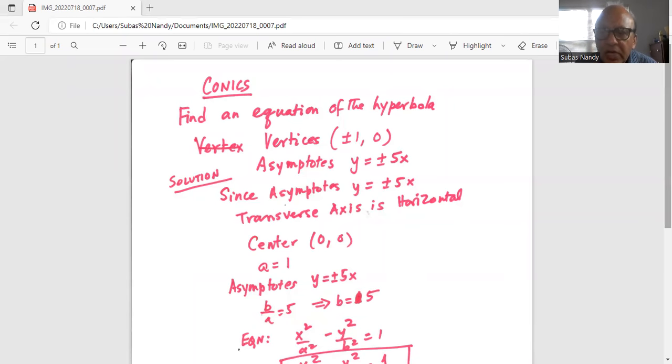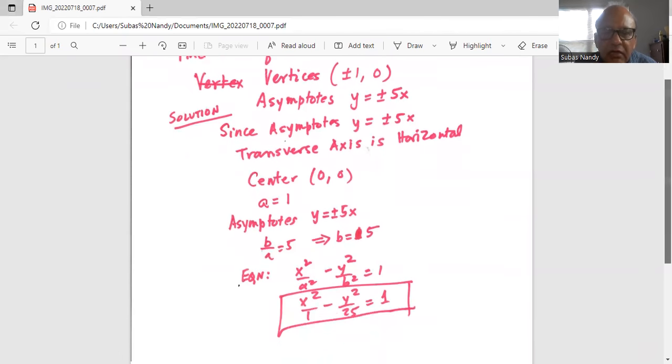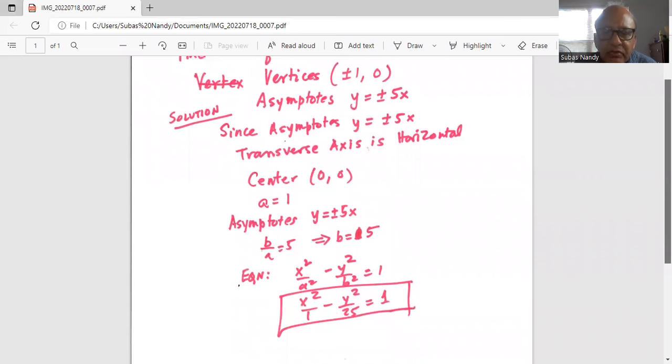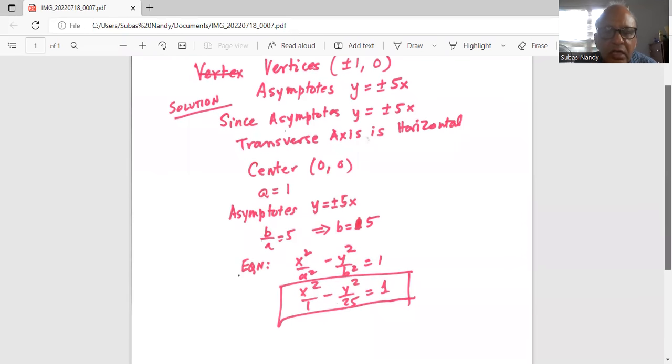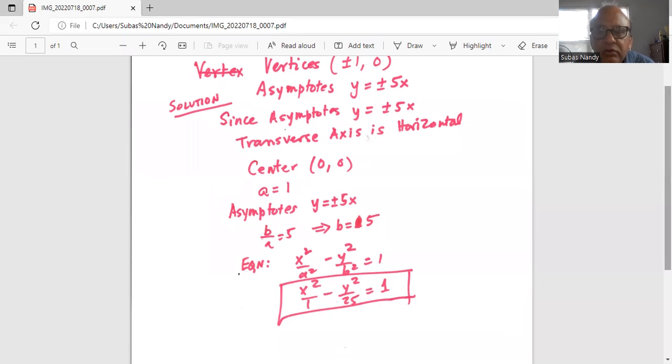So the equation of the hyperbola is x squared divided by a squared minus y squared divided by b squared equal to one. Or, x squared by one minus y squared by twenty-five equal to one.